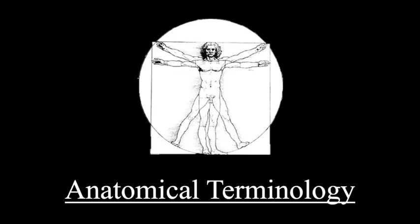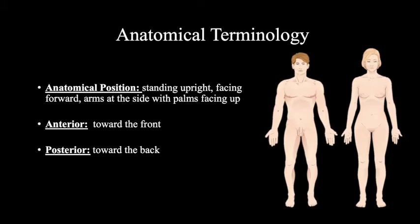Now let's get started with some anatomical terminology. I will only be teaching you three anatomical terms that will be useful for this unit. The first is anatomical position. As you see in the picture on the right, the two figures are standing upright, facing forward, arms at their sides, and their palms also facing up. This is what you would call the anatomical position.